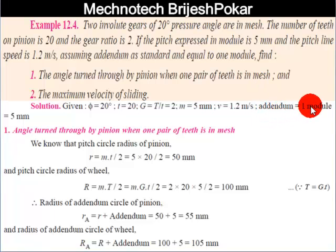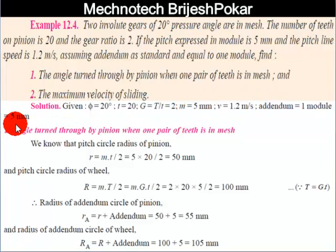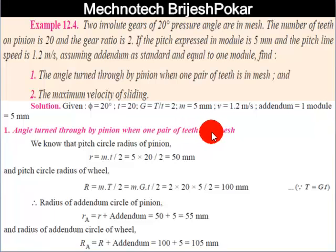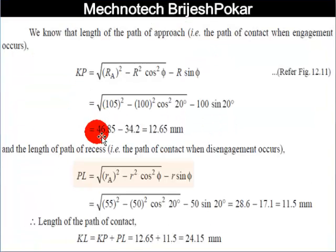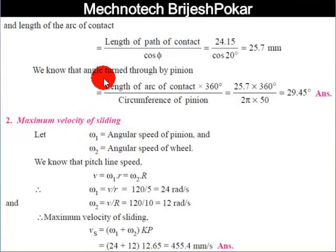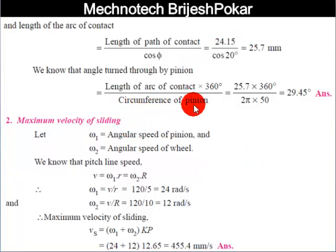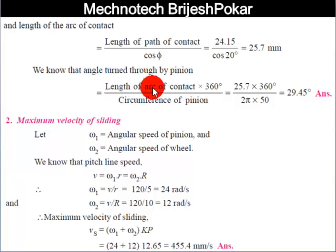One assumption: addendum is standard and equal to one module, so addendum = 1 module = 5 mm. We need to find the angle turned through by the pinion when one pair of teeth is in mesh. The equation for that is: angle turned = (length of arc of contact × 360°) / (2πr), where r is the radius of the pinion. To find this, we first need the length of path of contact KL.